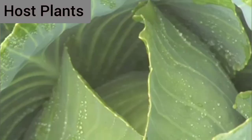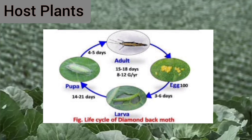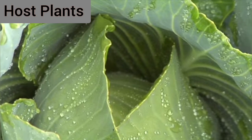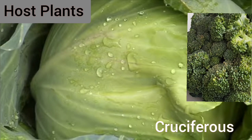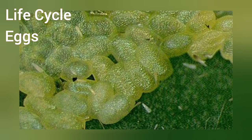Host plants are those plants on which the insect feeds to complete its lifecycle. The host plants of DBM are cruciferous plants, including cauliflower, cabbage, and broccoli. DBM eggs are oval and flattened, 0.4 mm long and 0.26 mm wide.